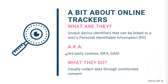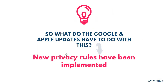So, what are online trackers? Online trackers are unique device identifiers that can be linked to your personal information, such as email, address, and name. These device identifiers have many names, such as third-party cookies, IDFA, GAID, and others. In fact, they collect data through uninformed consent.